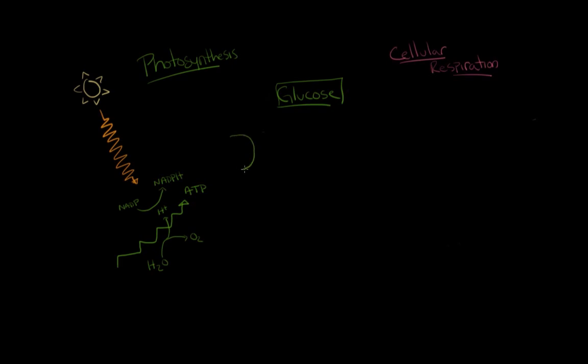The next step in this process is known as the Calvin cycle. And in this part of photosynthesis, we start with carbon dioxide. NADPH and ATP are added and there's a series of reactions that occur. And the specifics of these reactions are less important than the outcome, which is glucose.